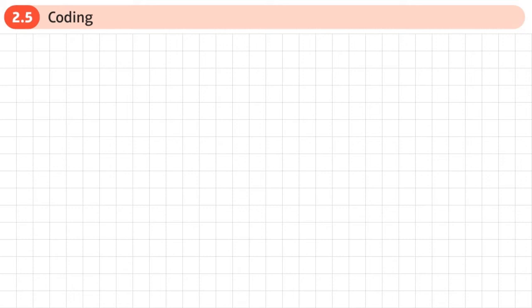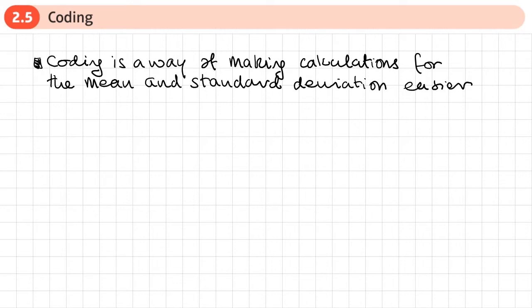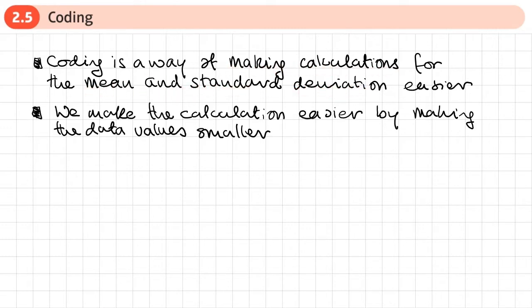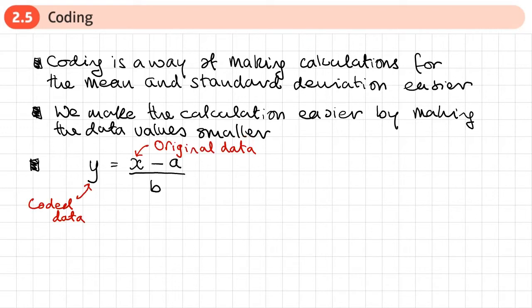This is the fifth and final section of chapter two on measures of location and spread. This section is on coding. Coding is a way of making calculations for the mean and standard deviation easier by making the data values smaller.